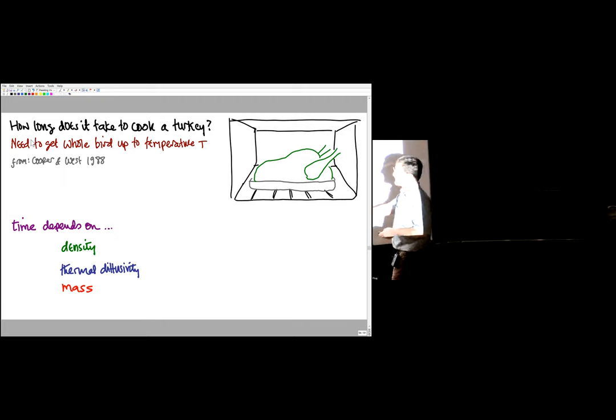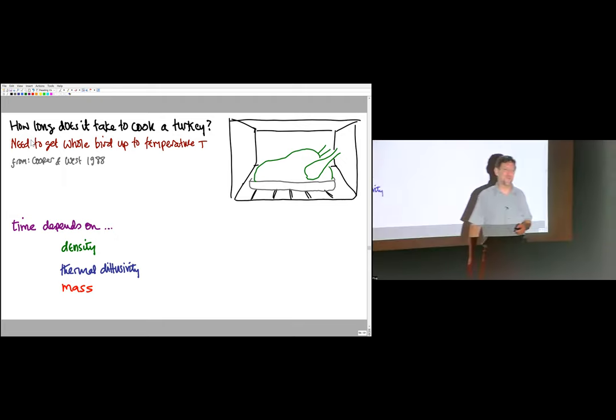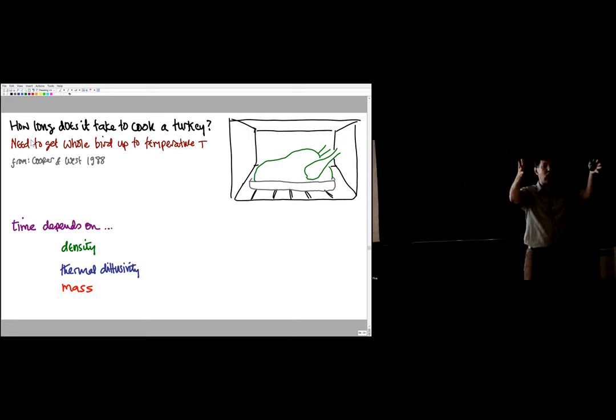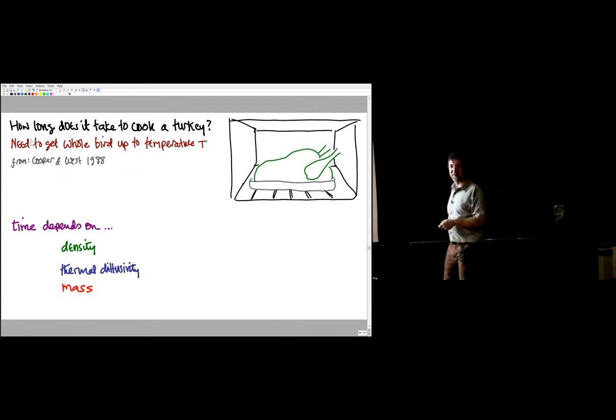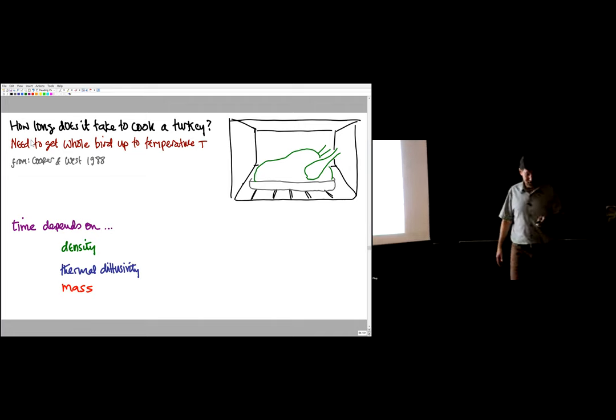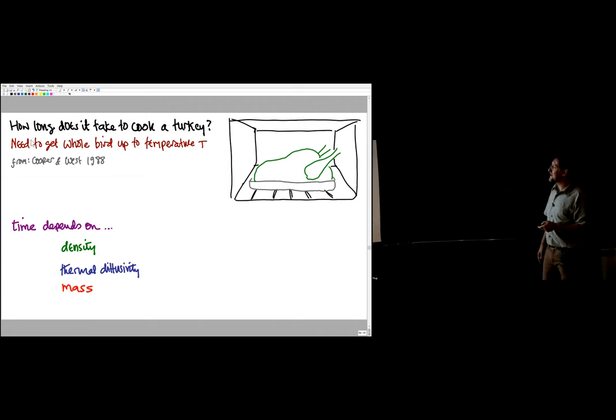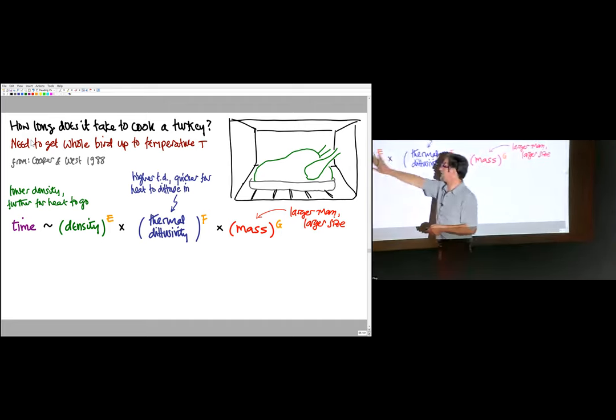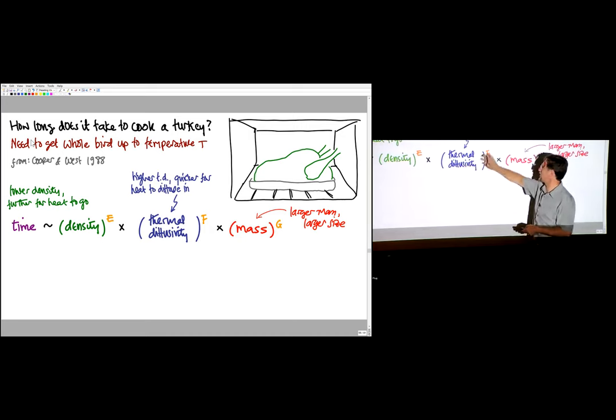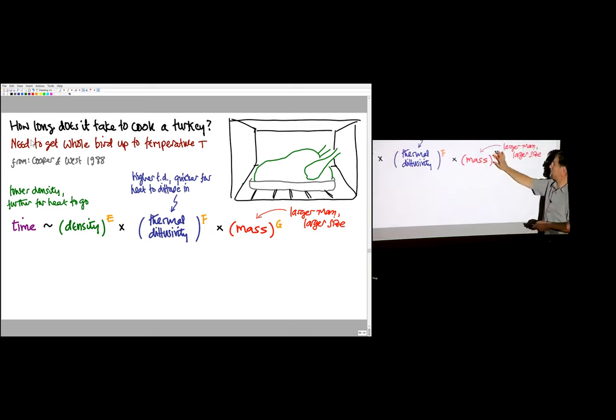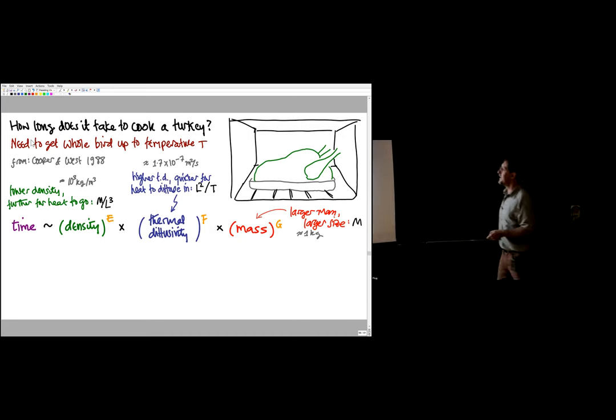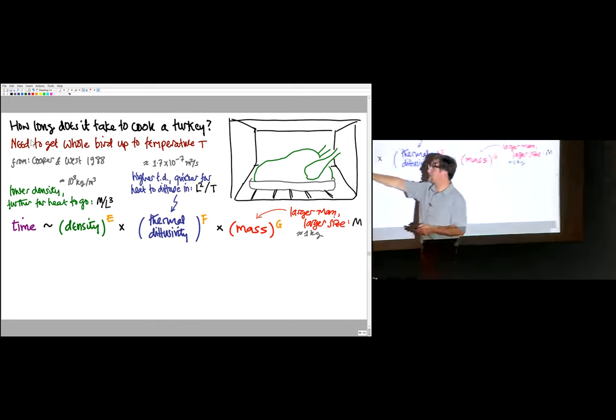And then a property of turkey meat, the thermal diffusivity, which is the answer to the question: if I create a temperature difference, hot and cold, how quickly does heat flow from hot to cold? And turkeys have a number—which physicists don't know, but I looked it up—that will give us an answer. So we're going to guess that the time it takes to cook a turkey goes like the density to some power times the thermal diffusivity to some power times the mass of the turkey to some power. Let's try and think a little bit about why. Well, the lower the density of the turkey, the bigger it will be for a given mass, so the further the heat has to go, so that should slow the turkey cooking down.